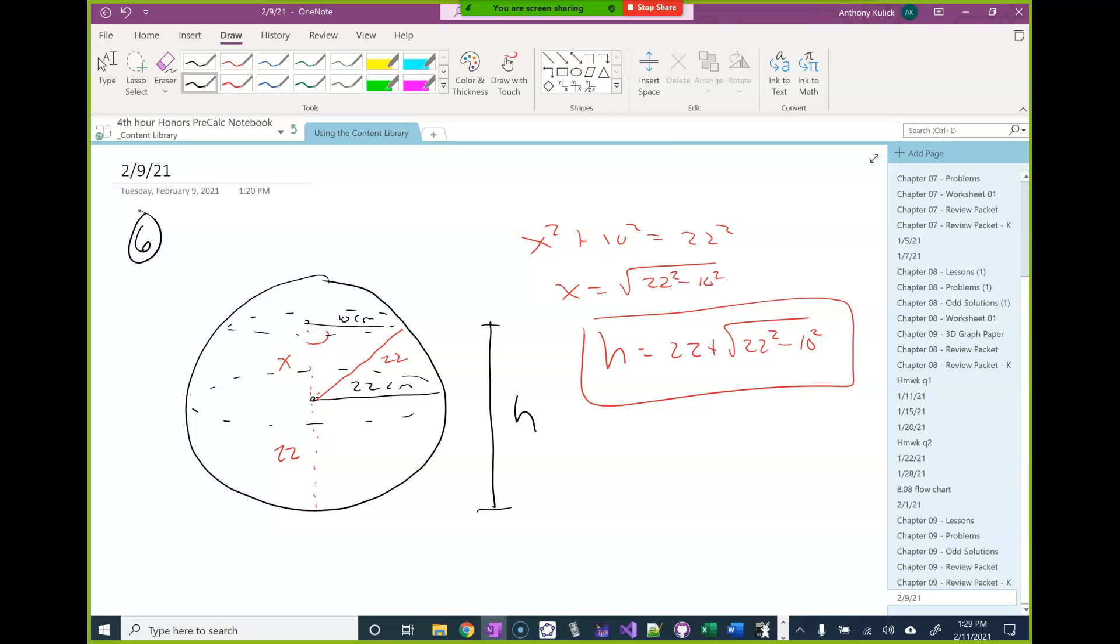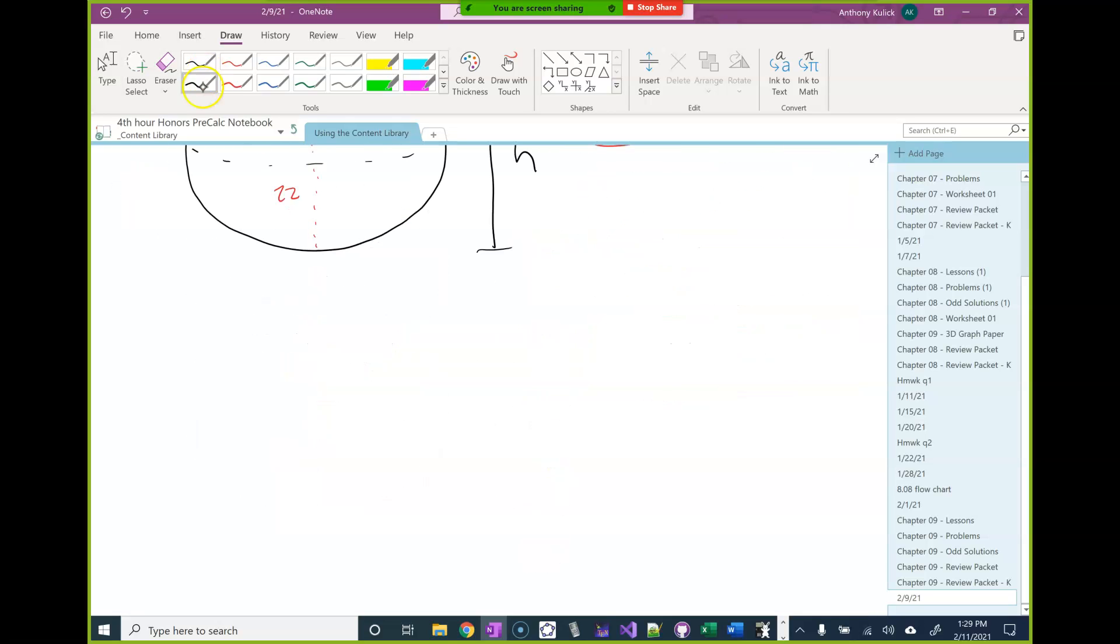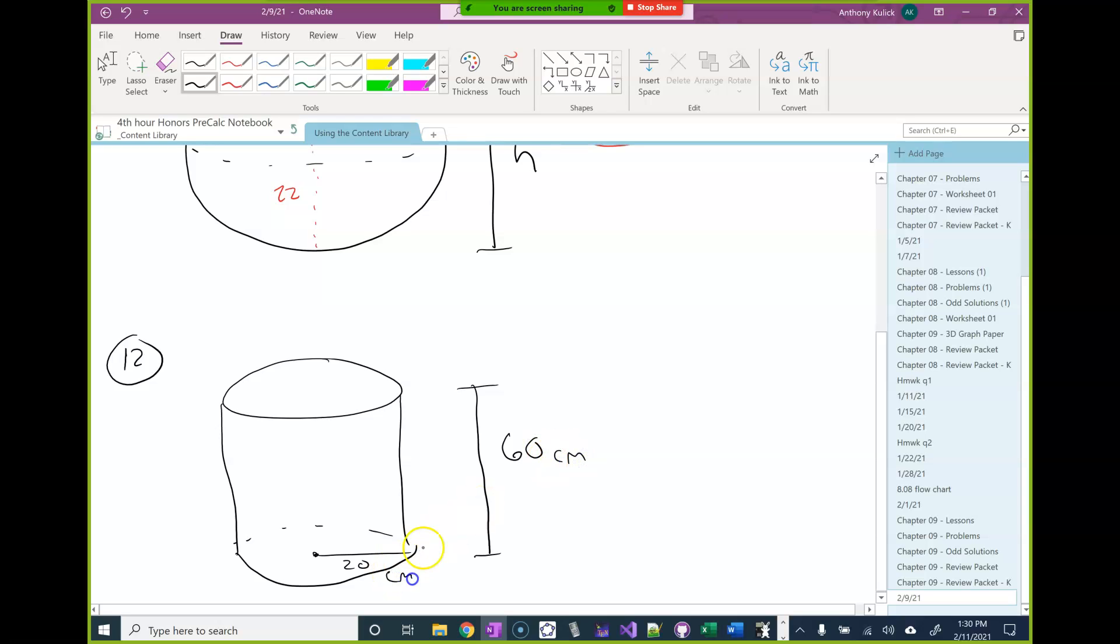You're welcome. Who else has some? Eva? 12? Okay. So 12, we have the diagram given, shows a cylinder with a radius of 20 centimeters. The height of the cylinder is 60 centimeters.